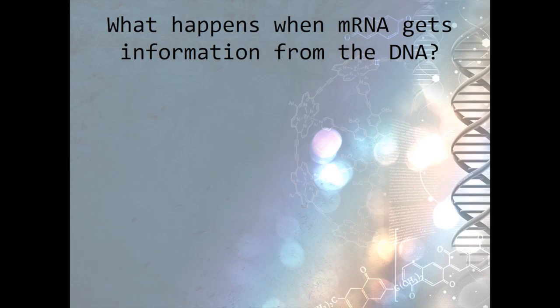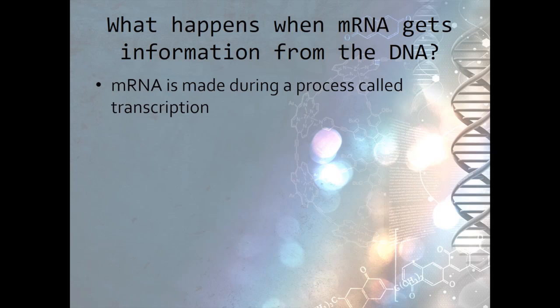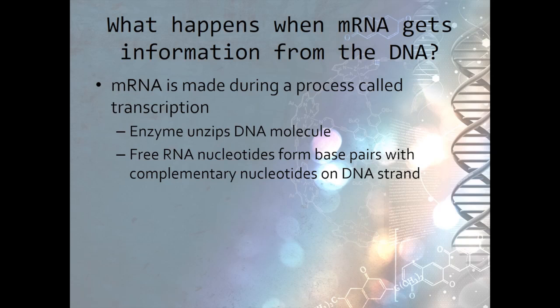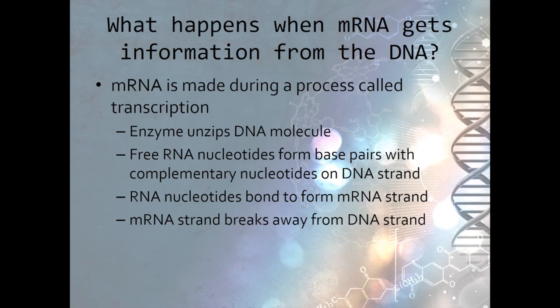First, let's consider the mRNA. How does it get the information from the DNA? mRNA is made through a process called transcription. Five things happen during this process. First, an enzyme unzips the DNA molecule. Then, RNA nucleotides pair with the complementary nitrogen bases on the DNA strand. Once the RNA nucleotides are paired up with their complementary bases, the nucleotides bond to form the mRNA strand. After the mRNA strand has formed, it breaks away from the DNA strand and leaves on its way to the ribosome, at which point the DNA strands rejoin.